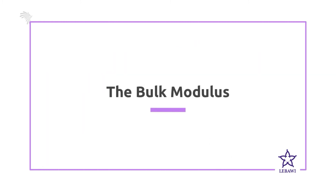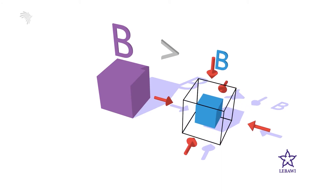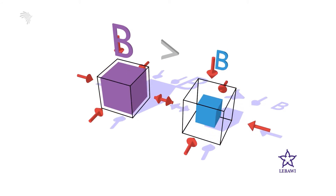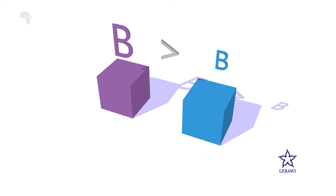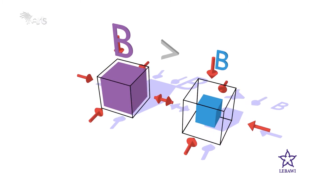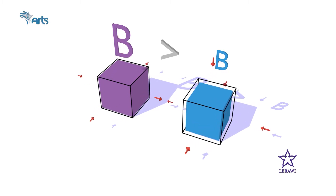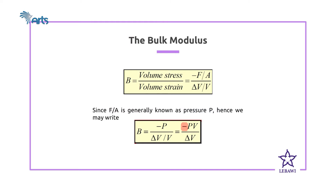Bulk modulus is the ratio of volume stress to volume strain. We basically use this bulk modulus for liquids because liquids have definite volume but not definite shape. As a result, we calculate the change in terms of volume, not in terms of length or width or height. We apply a certain pressure on a volume of liquid and compress it, causing the volume to decrease. The minus sign in the formula accounts for this compressibility of the liquid.